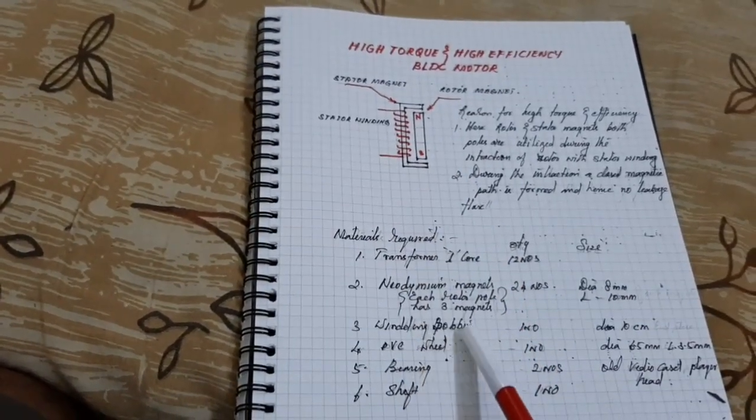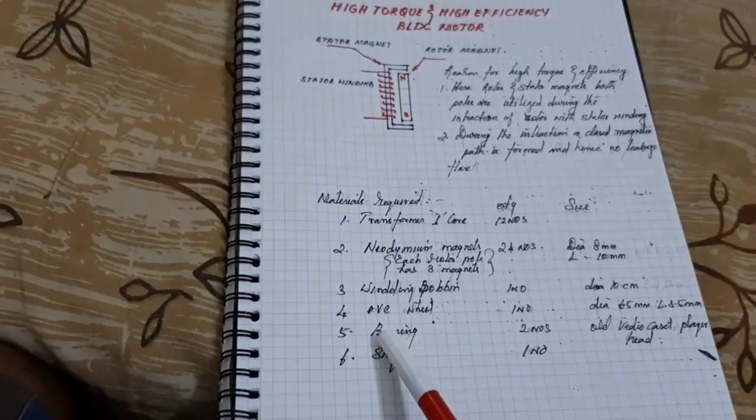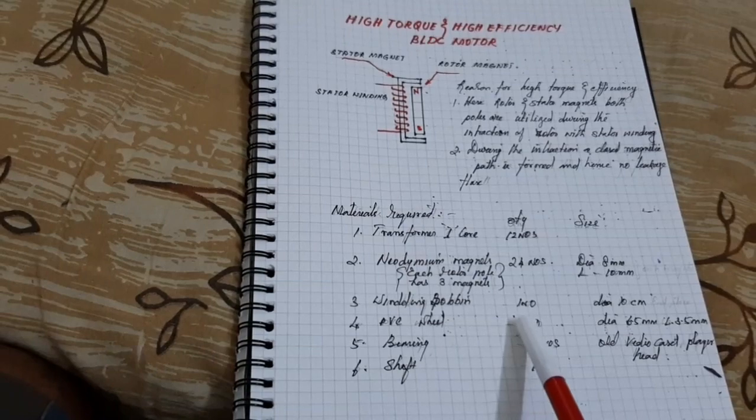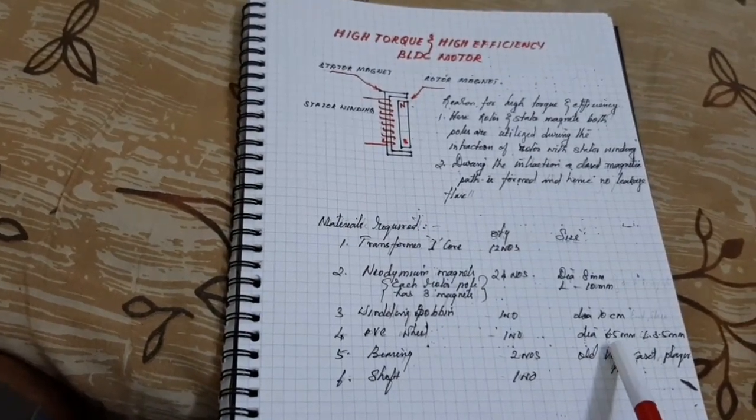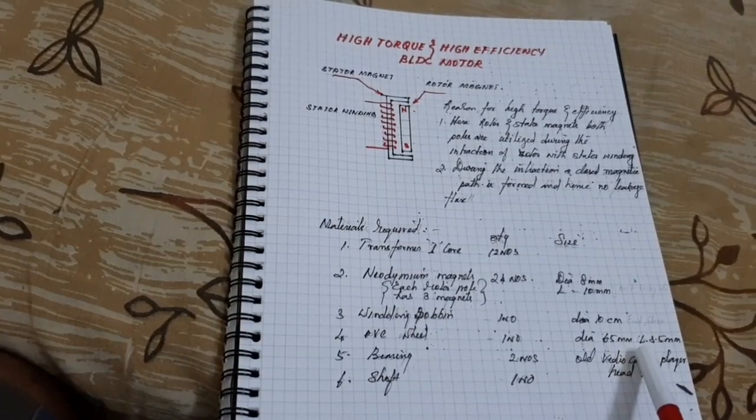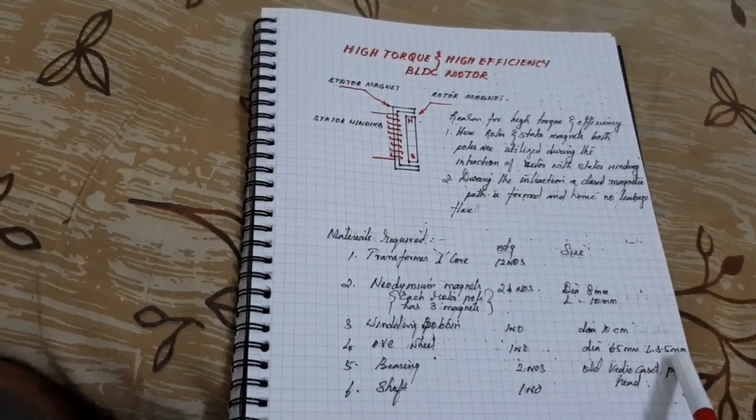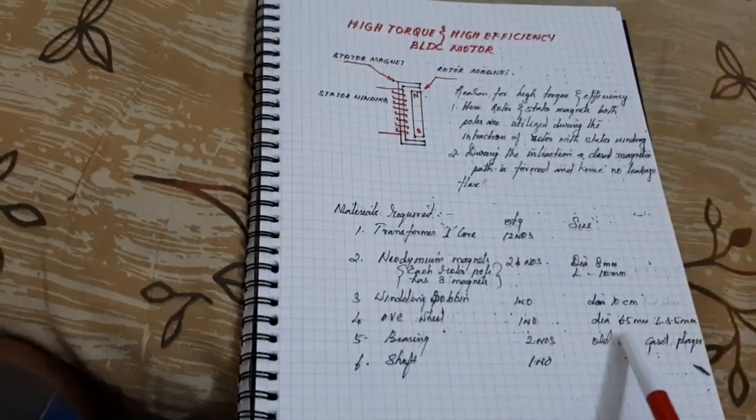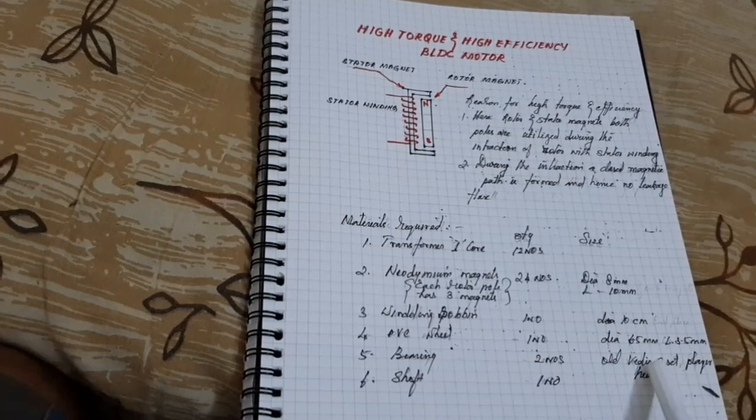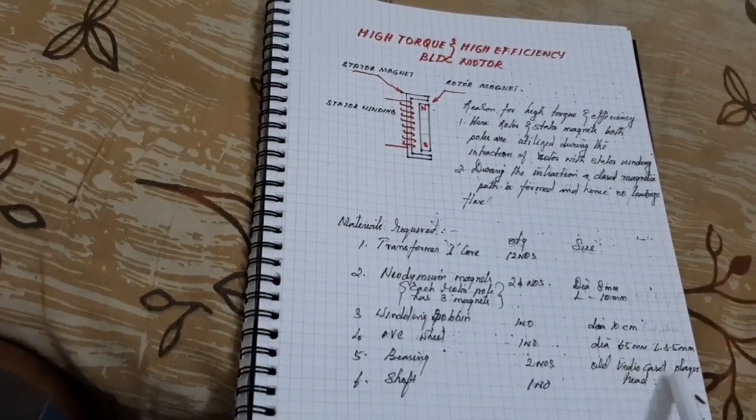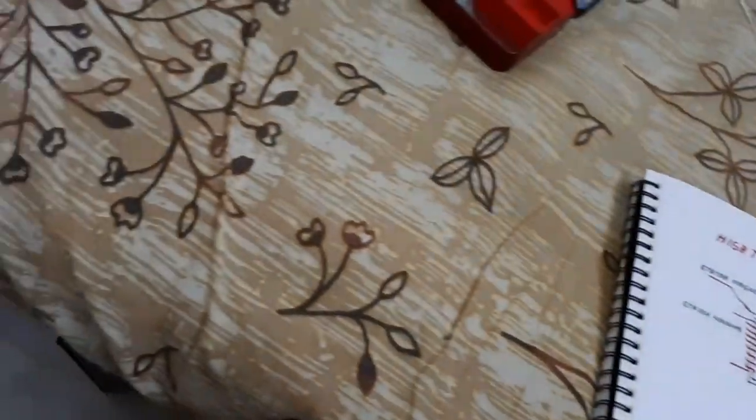And next one, winding bobbin. It is for the motor body and PVC wheel. It's used for rotor. Diameter is 6.5 cm and 4.5 cm length. Here, bearing 2 numbers. The bearings are used with old VCD player, cassette player head. And the shaft. Now, look at that.